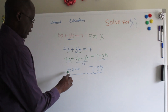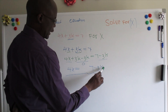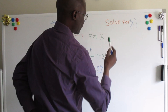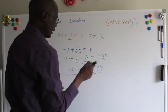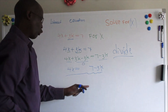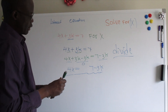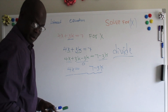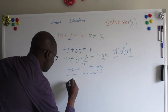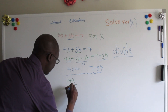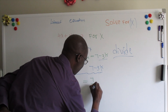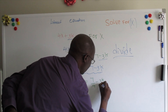Now we have 4x equals 7 minus 3k. What we're going to do here is divide the whole equation by 4. So we have 4x divided by 4 equals 7 divided by 4 minus 3k divided by 4.